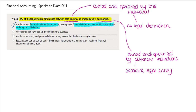The next statement says that only companies have capital invested into the business. This is not a correct distinction — all businesses will need some kind of capital injection. For sole traders it is referred to as capital, and for companies it is referred to as share capital.